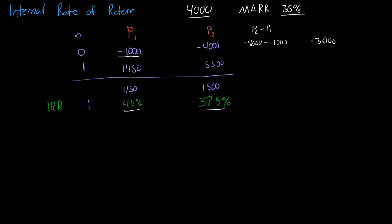What's our rate of return on $3,000 from the difference? What's the difference between the returns? That's P2 minus P1, $5,050 minus $1,450.